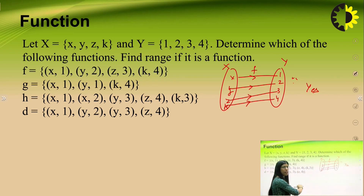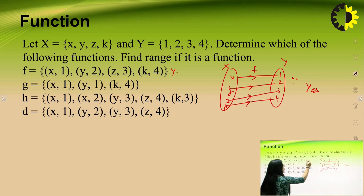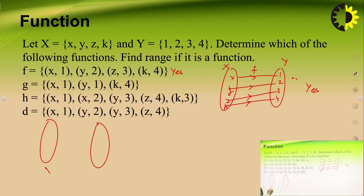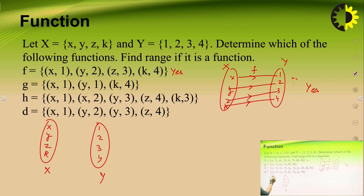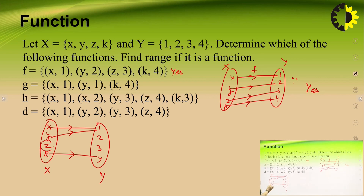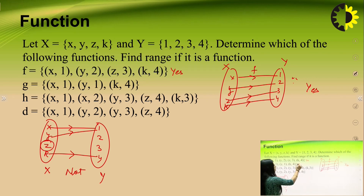In example G, we have two sets X and Y. X contains X, Y, Z, K and Y contains 1, 2, 3, 4. Here X is associated with 1, Y is also associated with 1, and K is associated with 4. However, Z is an element of set X that is not associated with any element of set Y — it does not have any image. Therefore, this is not a function.